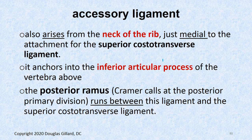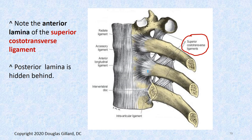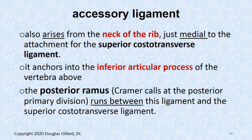The accessory ligament also arises from the neck of the rib, just medial to the superior costal transverse ligament. It anchors into the inferior articular process of the vertebra, going all the way into the spine. Notice there's a little hole next to these ligaments — take a guess what comes through there. The ventral ramus comes out of there, so not only do you have the foramen, you have another little tunnel made by these ligaments.